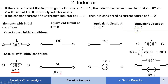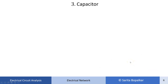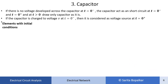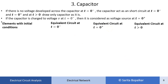You can correlate this with the equation of current through the inductor: 1 upon L, integration 0 to t of V(t) dt is the current at the present instant of time, and I(0+) — which equals I(0 minus) — is the initial current. Both currents are added, that's why they are connected in parallel. Now for the capacitor, we represent it in the equivalent circuit at t equal to 0 minus, t equal to 0 plus, and t greater than 0.